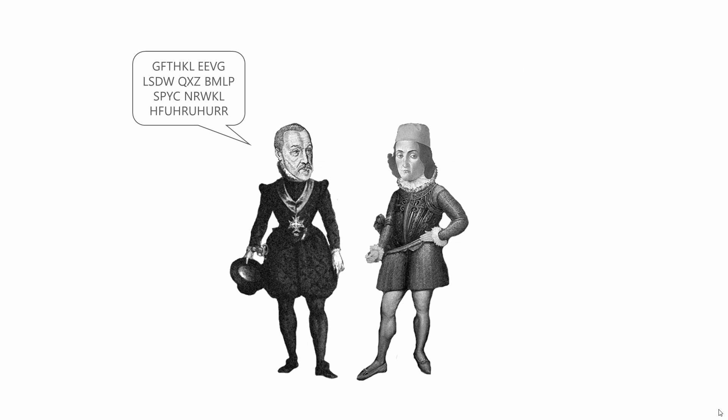In the days of Vigenère and Bellaso, the Keyword Cipher was near enough unbreakable. But these days, someone could write a computer program that simply tried every word in the dictionary against the ciphertext until it produced something meaningful. There are about 200,000 words in the English dictionary, which, believe it or not, would not take a computer very long at all to try one after another — modern computers are very fast.